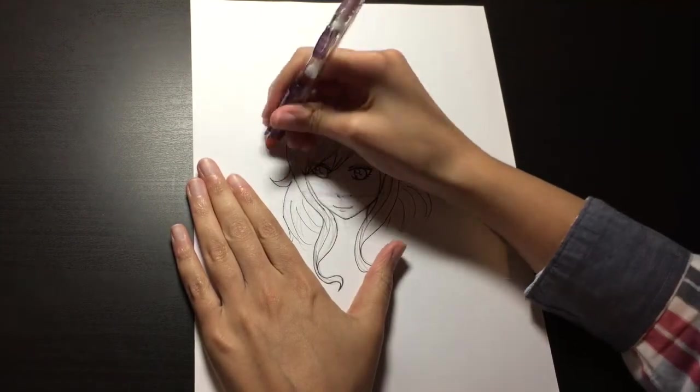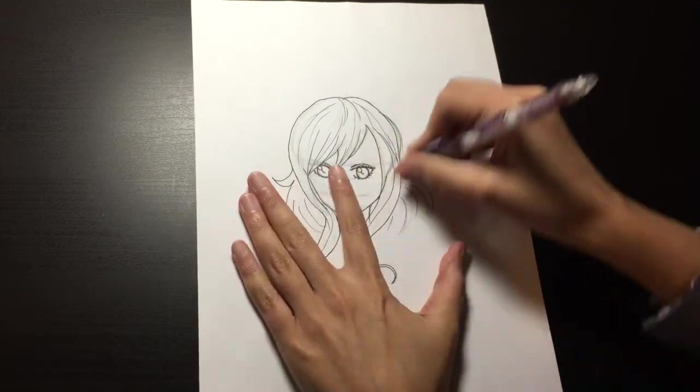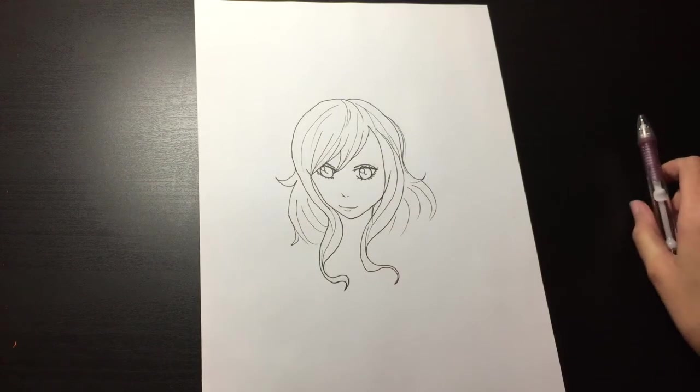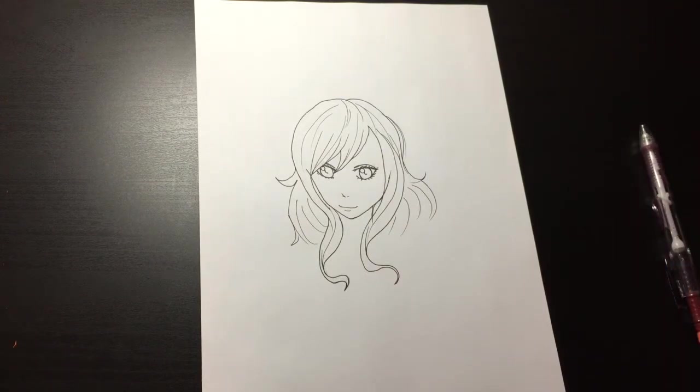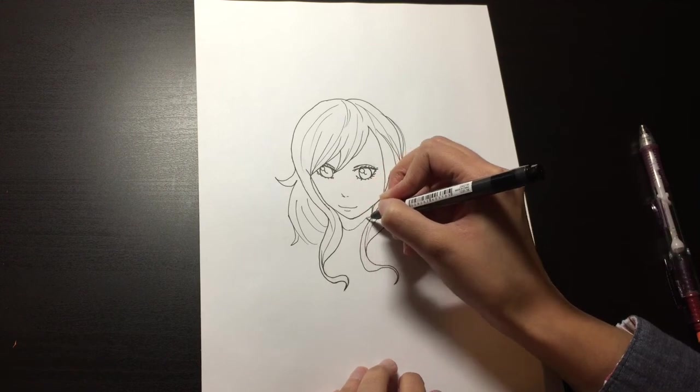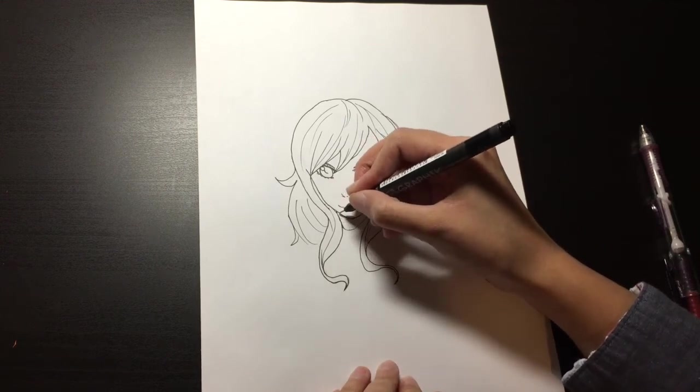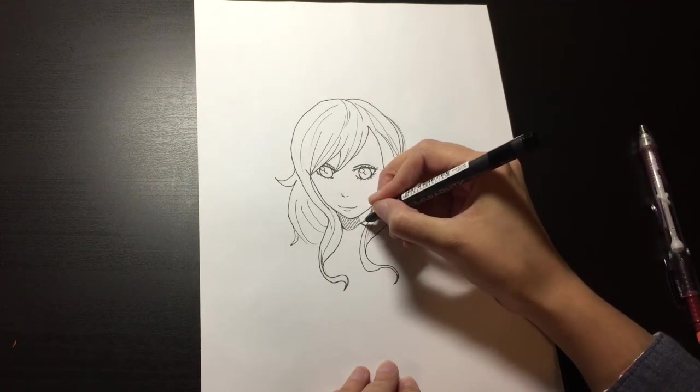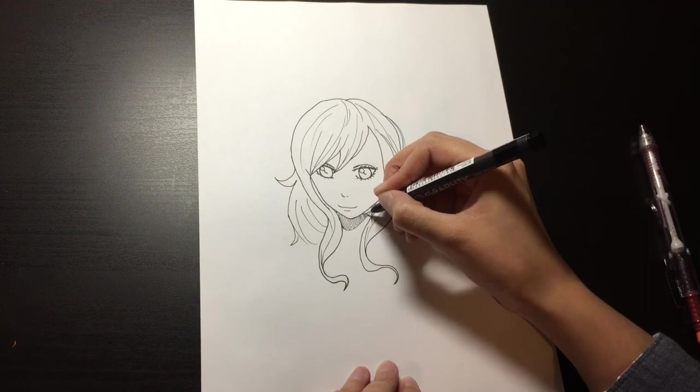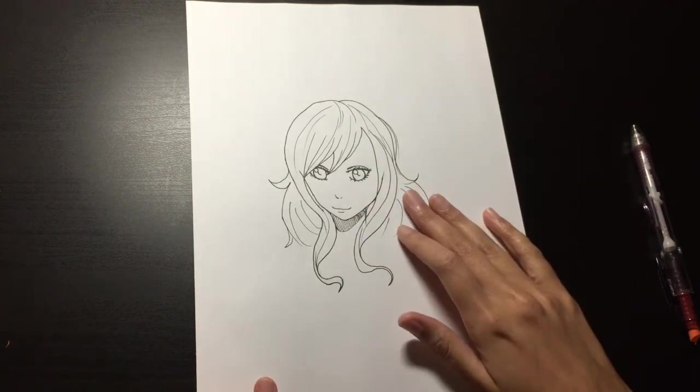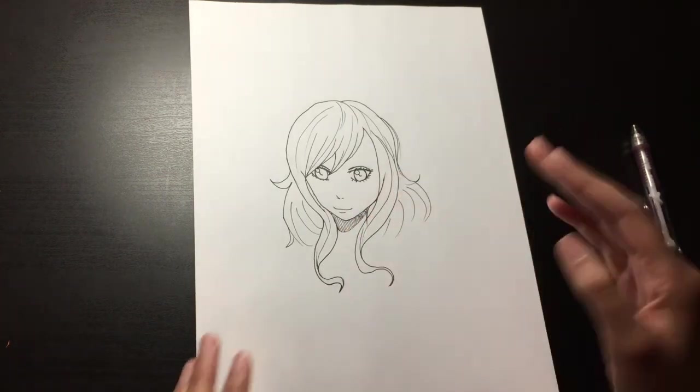And now I'll go ahead and erase this. Alright, and also, just if you want to add a little extra detail, what I like to do just under the neck is add this little shadow area. So yeah, this just adds a little extra, a little bit of shading, just without color.